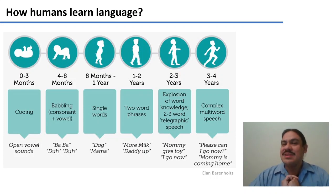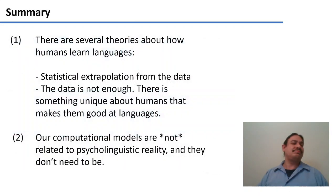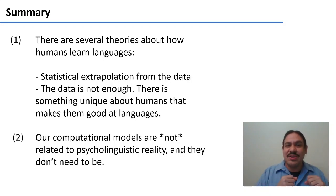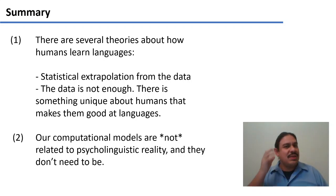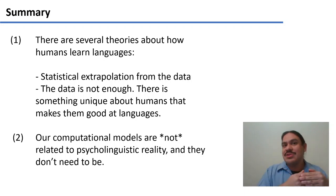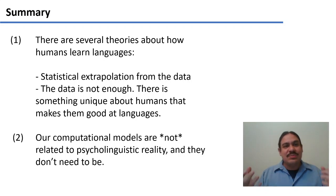Children learn very fast and the errors they make are very different from those of a computer, so we probably don't want to model our computer learning of language on human learning. In summary, some theories say we extrapolate from the data using general cognition to arrive at a knowledge of the language; some say the data is not enough and something unique about us as humans makes us particularly good at language. Our computational models are not only unrelated to these human developmental models — they don't need to be. We do not need to imitate how humans learn language; all we need is to imitate their capacity at understanding and producing language.